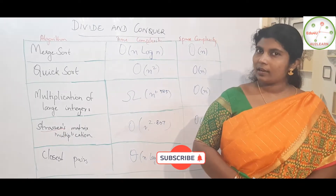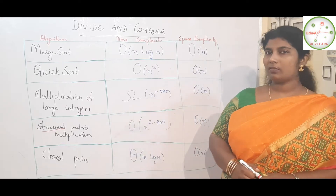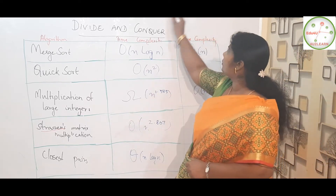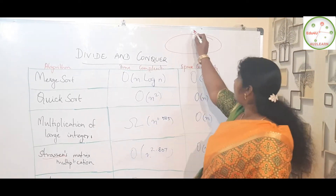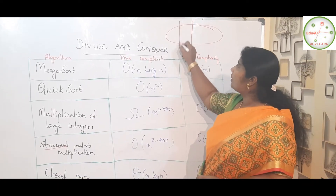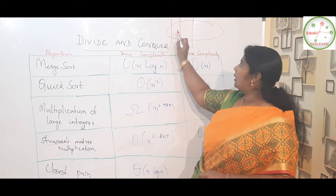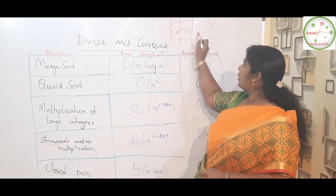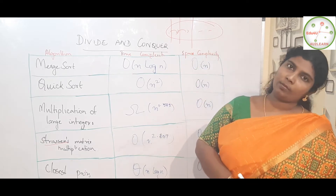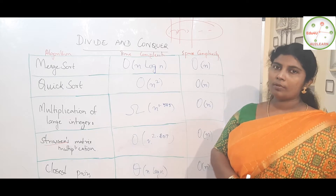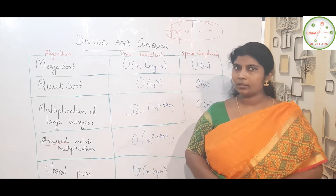So what is divide and conquer? We have a big problem. This big problem is going to be divided into smaller and smaller sub-problems. These sub-problems, divided into two halves, are further divided into smaller units. The smallest unit is solved and then combined — all the combined results together give the solution for the bigger problem. That is the normal strategy followed in the divide and conquer method.